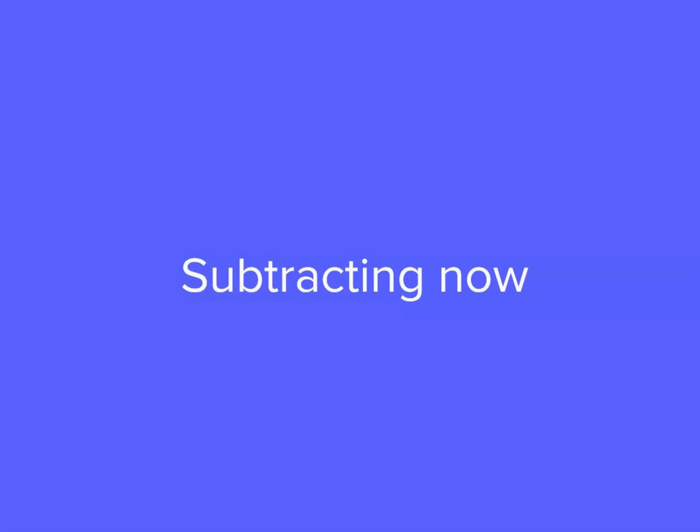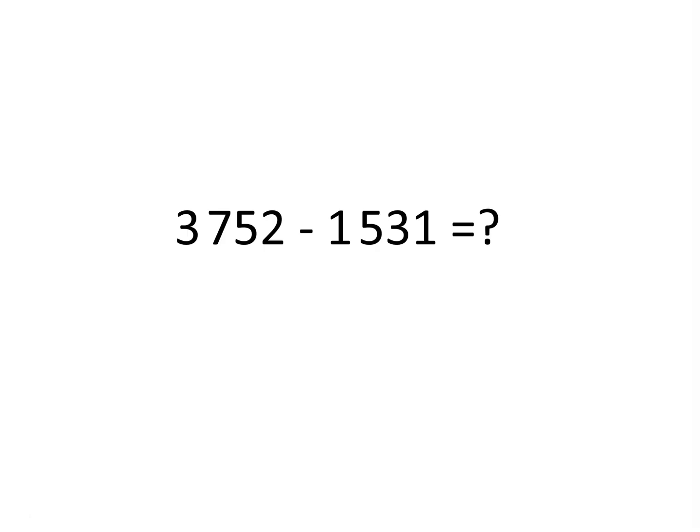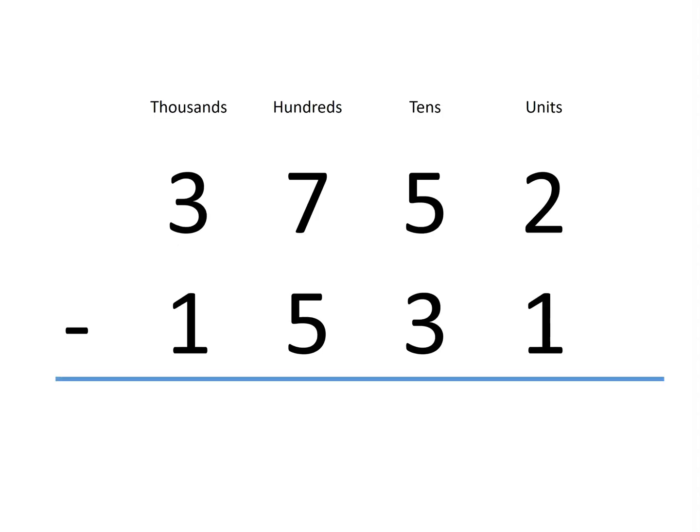What do you get when you evaluate 3,752 minus 1,531? Let's find out. If we start by subtracting the units, 2 units minus 1 unit is 1 unit.